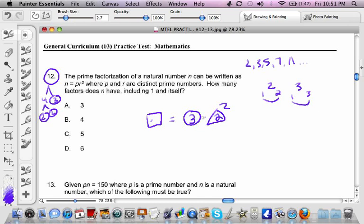Okay, so if it's 3 times 2 to the second, I mean that fits the rule. P is a prime and it's 3, and r is prime and it's 2, and they're two different distinct primes, then it would get me a natural number of 12. Okay, and then I could just ask myself this question. How many factors does 12 have, including 1 in itself?